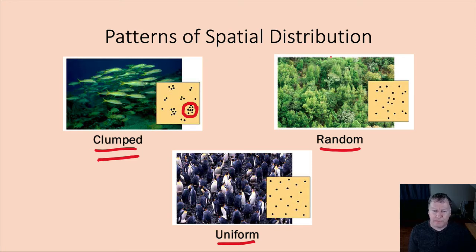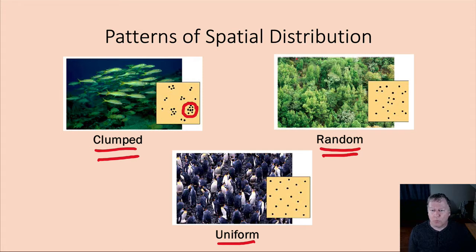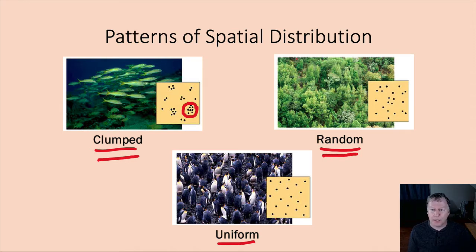Another distribution pattern is random, where there's no distinct pattern on where individuals are found — they just randomly occur. A random pattern might occur when a tree or dandelion releases seeds on the wind, and the wind blows the seeds so they fall to the ground randomly. That is an example of a random distribution pattern.